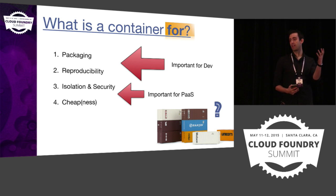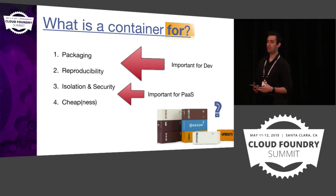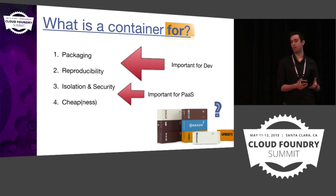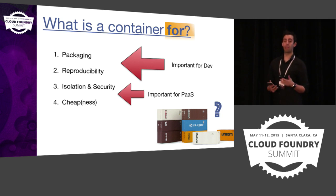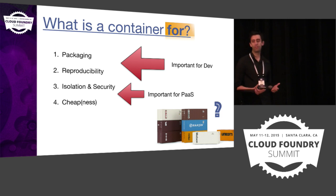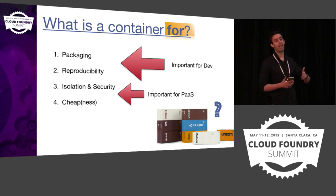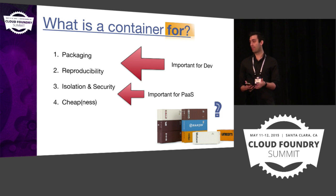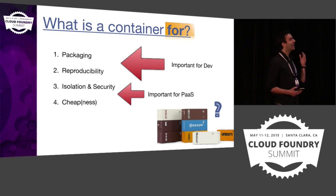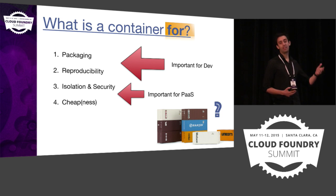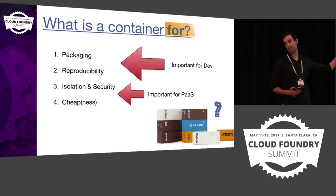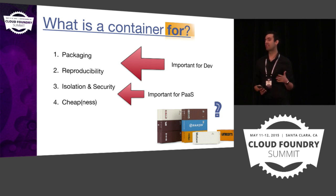Some of these bits are more important for some people than others. For the Docker use case, what's really important is the awesome packaging workflow, the reproducibility workflow — that's the developer experience on a laptop. If you're building a PaaS, a multi-tenant platform environment, what you really care about is running images securely in production, scaling them, not having people getting other people's data, and doing that at a good cost. There will always be trade-offs when building systems, and Garden is very much built to emphasize the latter things, but it turns out we can enable Docker use cases as well.